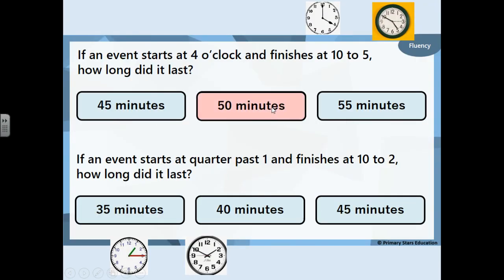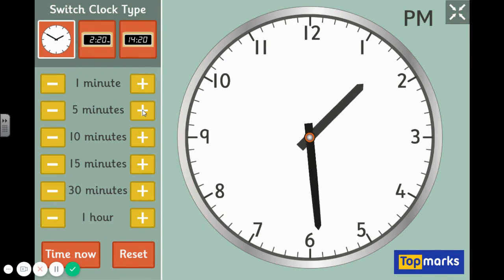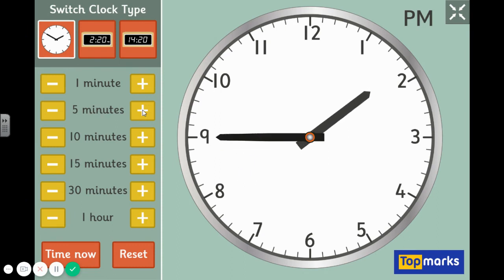If an event starts at quarter past one and finishes at 10 to 2, how long did it last — 35, 40, or 45 minutes? At quarter past one, the minute hand is on 3 and it goes all the way around to end on 10. Counting in fives: 5, 10, 15, 20, 25, 30, 35. The duration was 35 minutes long.